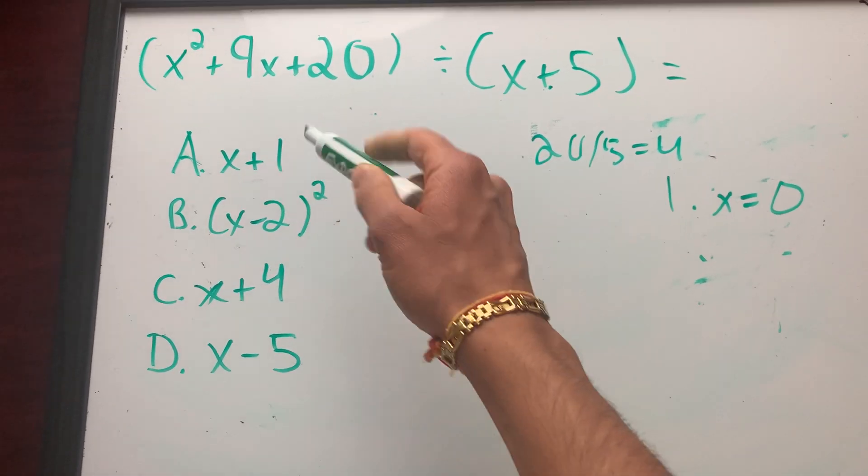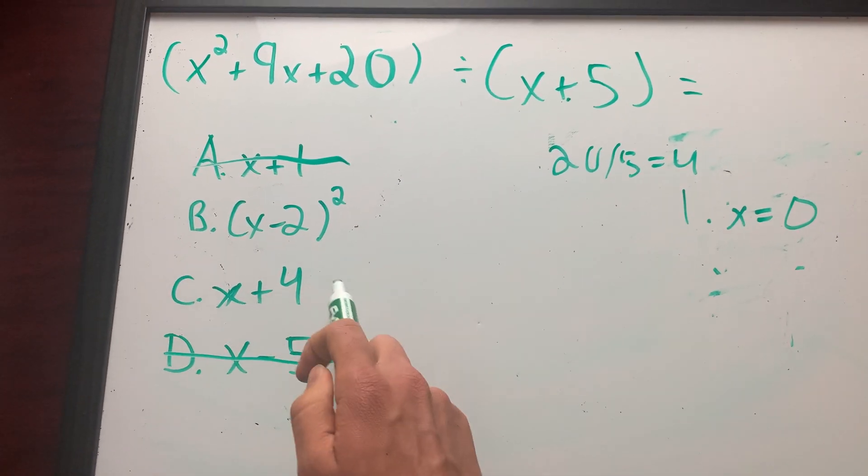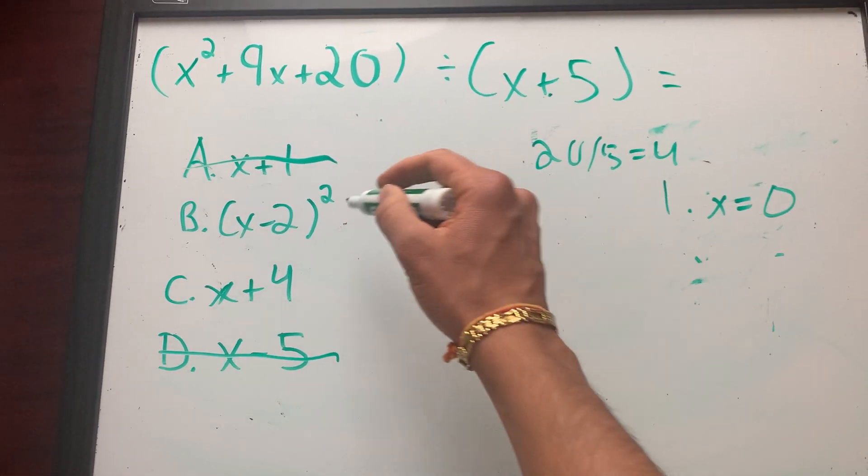So let me plug in x equals zero into these. If I plug in zero, I get one. That's gone. If I plug in zero, I get negative five. If I plug in zero, I get four. If I plug in zero, I get four. So these two check out, right?